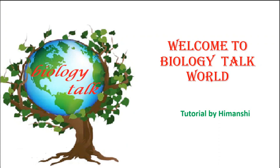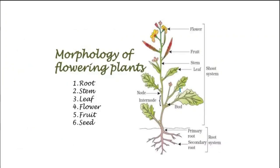Hello friends, welcome to Biology Talk World tutorial by Himanshi. Today we are going to start a new lesson of class 11th biology, that is morphology of flowering plants. In this chapter, we will deal with different morphologies. Morphology means external outlook — the different forms and structures that you will see.